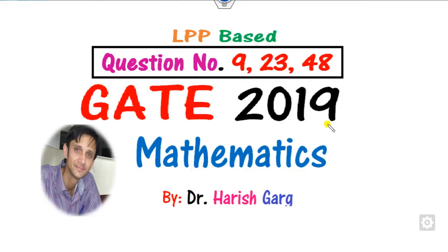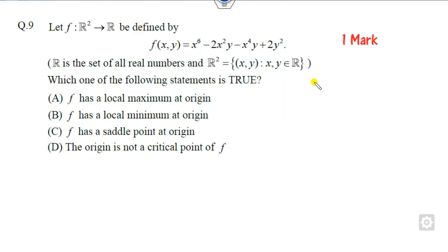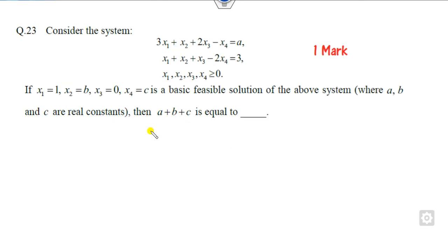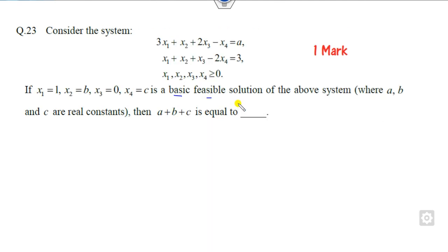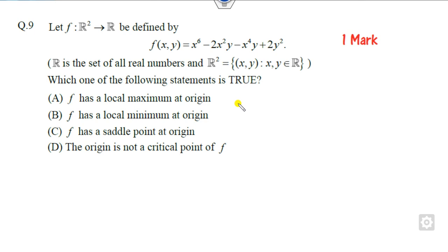Hello everyone. Welcome to the GATE 2019 question paper. In this lecture we will see how you can solve LPP-based questions — question number 9, 23, and 48 — in a very simple manner. Question 9 is related to finding the maximum, minimum, or saddle points and is worth 1 mark. Question 23 is related to basic feasible solutions, also 1 mark. Question 48 is a 2-mark question related to the assignment problem.